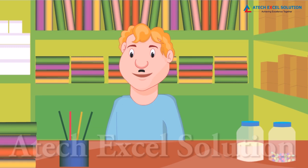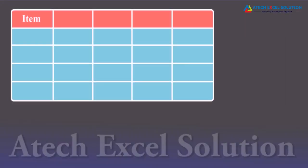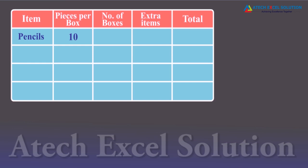You all might have visited a stationary shop for purchasing books, pencils, pens, and erasers. Have you ever thought how the shopkeeper arranges all the stocks and maintains an inventory? Let's look at one such inventory form made by the shopkeeper. This form contains five columns: item, pieces per box, number of boxes, extra items, and total.